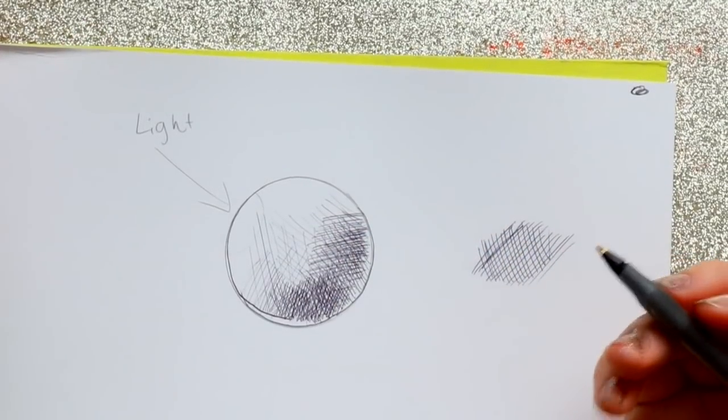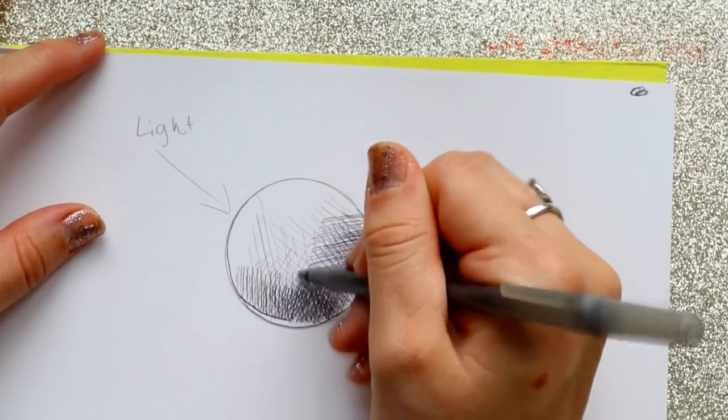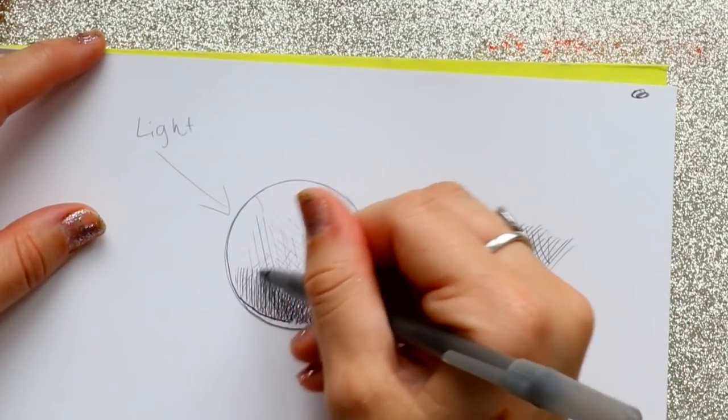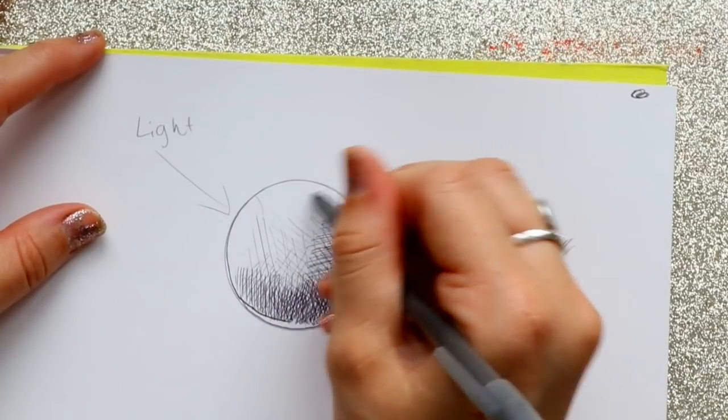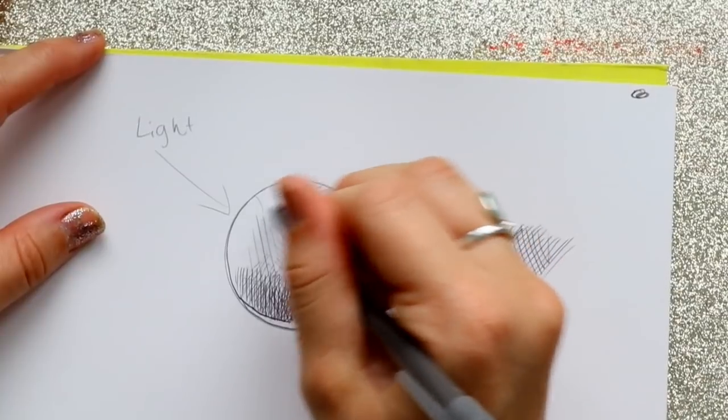If I really really want to get dark, I'm just making individual lines, but on top where that light is hitting, no lines at all.